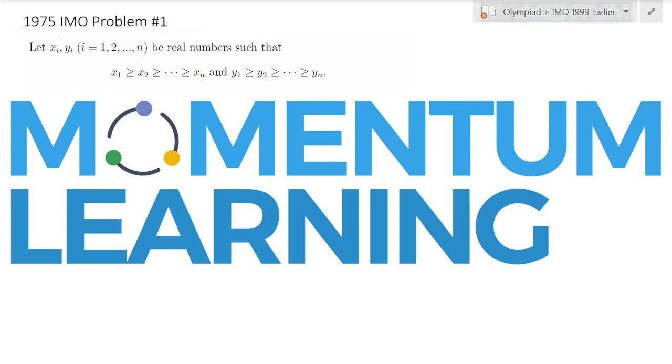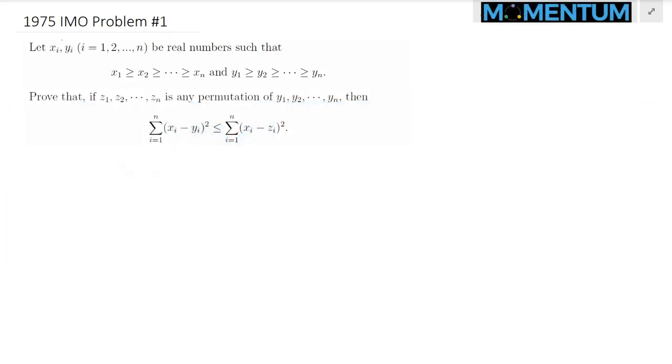Consider the following IMO problem from the year 1975. We are given two sequences of real numbers, x sub i's and y sub i's, and they are also ordered in a decreasing fashion. Let z sub i's be a permutation of the sequence y sub i's, and we would like to prove the following inequality.